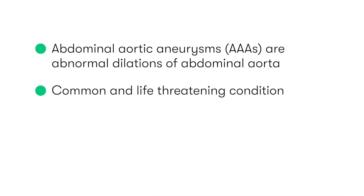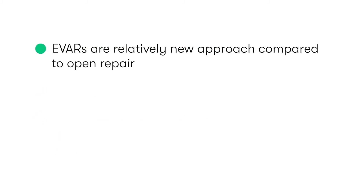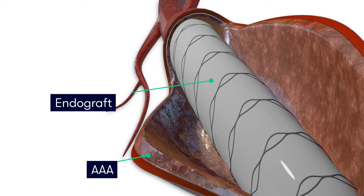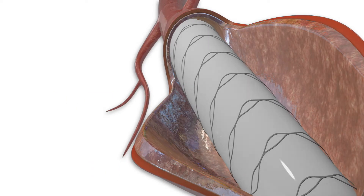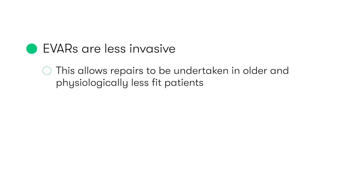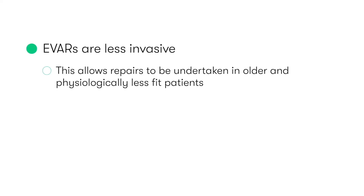In patients with AAAs who meet the criteria for intervention, we have two options: open surgical repair of the AAA, or the endovascular repair, also referred to as EVAR. EVARs are a relatively new approach compared to the traditional open approach, and are performed by inserting an endovascular stent graft via the patient's groin and deploying it within the AAA lumen to prevent worsening and potential rupture of the aneurysm. The less invasive nature of EVARs has allowed repairs of AAAs to be undertaken in older and physiologically less fit patients than would normally have been possible with the more traditional open approach.